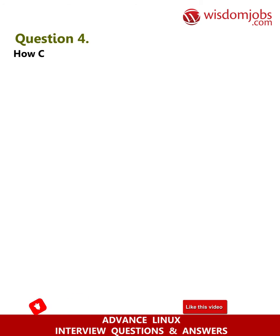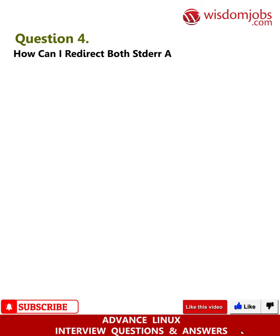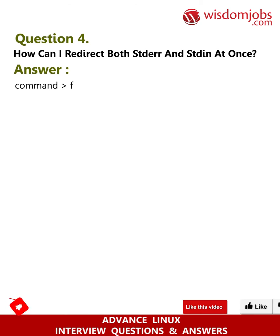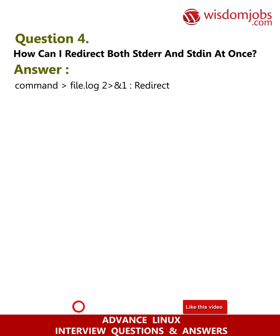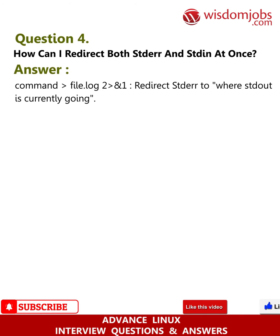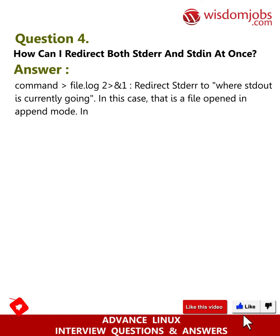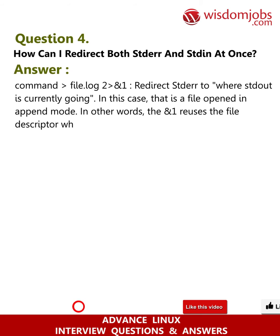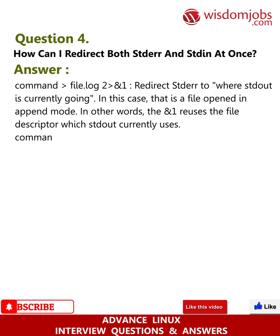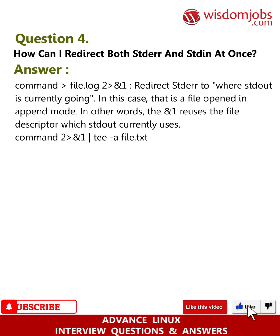Question 4: How can I redirect both standard output and standard error at once? The command is: command > file.log 2>&1 | tee -a file.txt